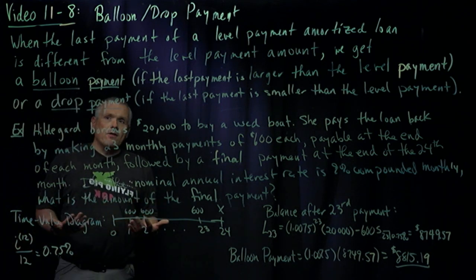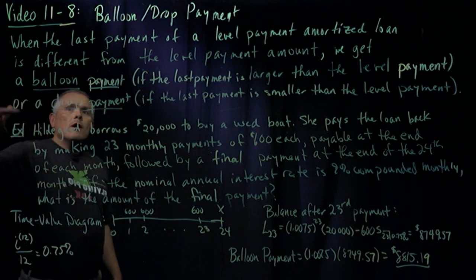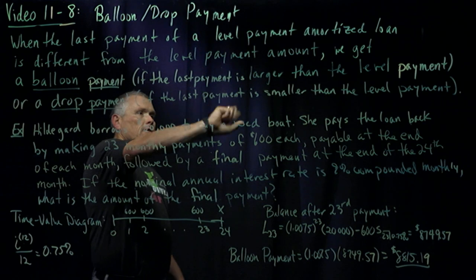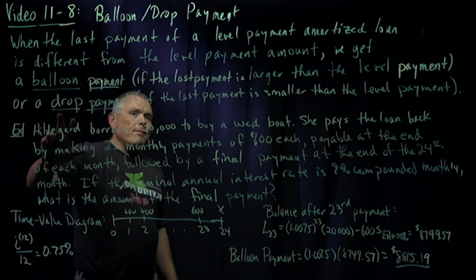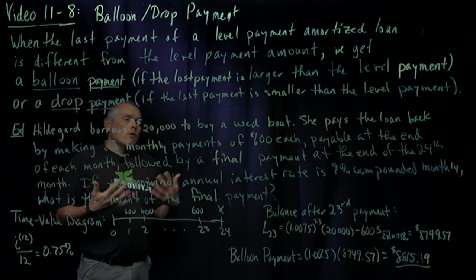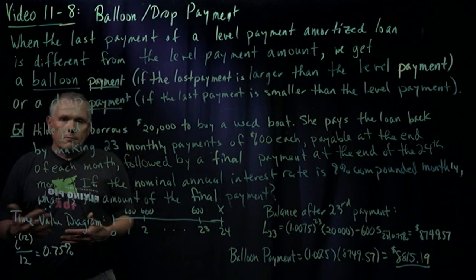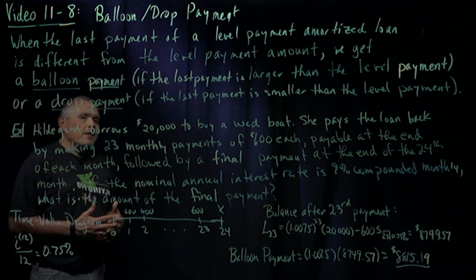In either case, we handle them exactly the same way. The only difference between balloon and drop payment is just the language. You get a balloon payment for your final payment if the last payment is larger than your level payment you've been making all along. You get a drop payment if your last payment is smaller than the level payment you've been making all along. The only difference between the two is literally if one is bigger than the level payment or if it's smaller than the level payment. But you handle them in the exact same way.